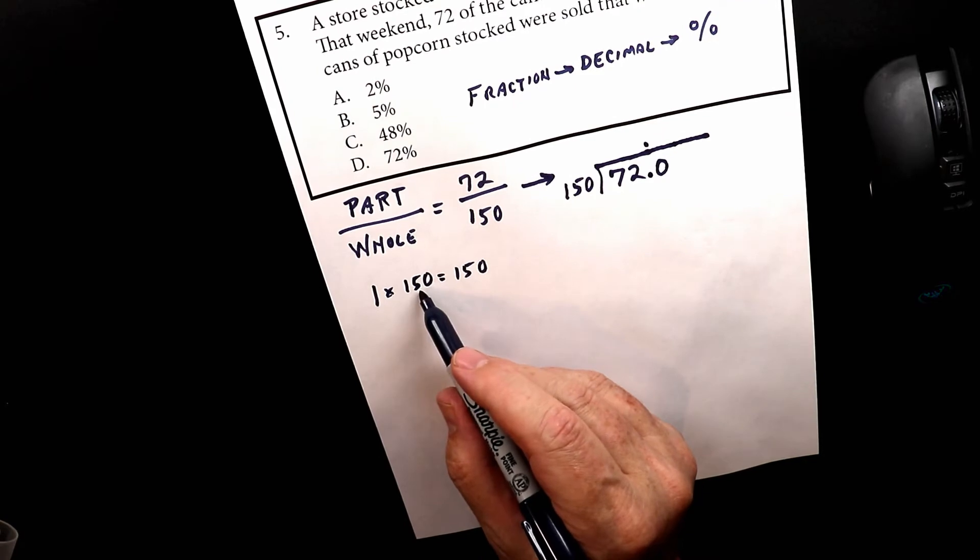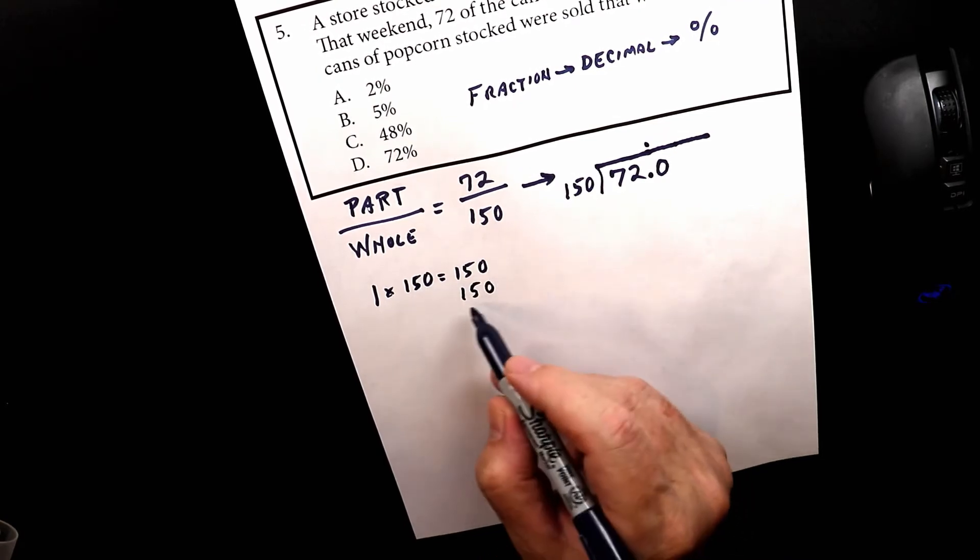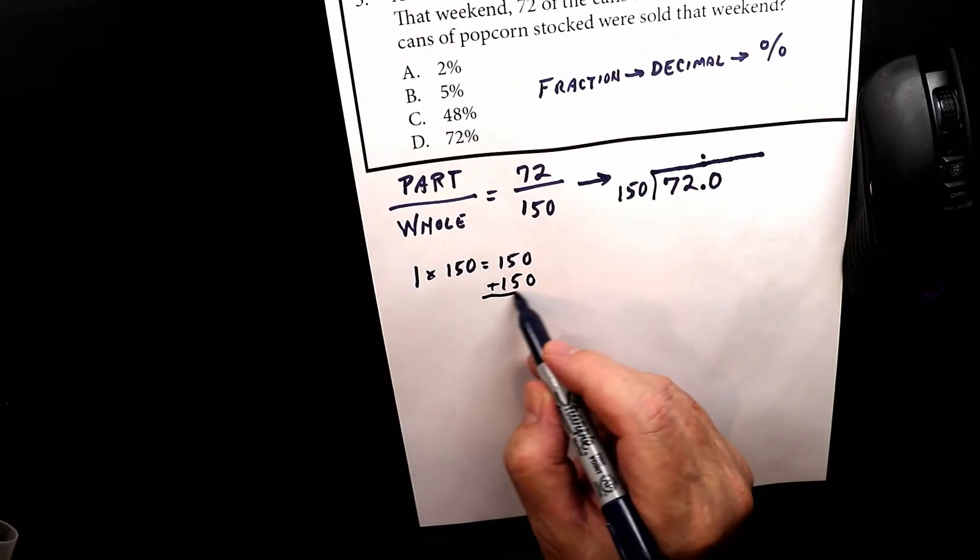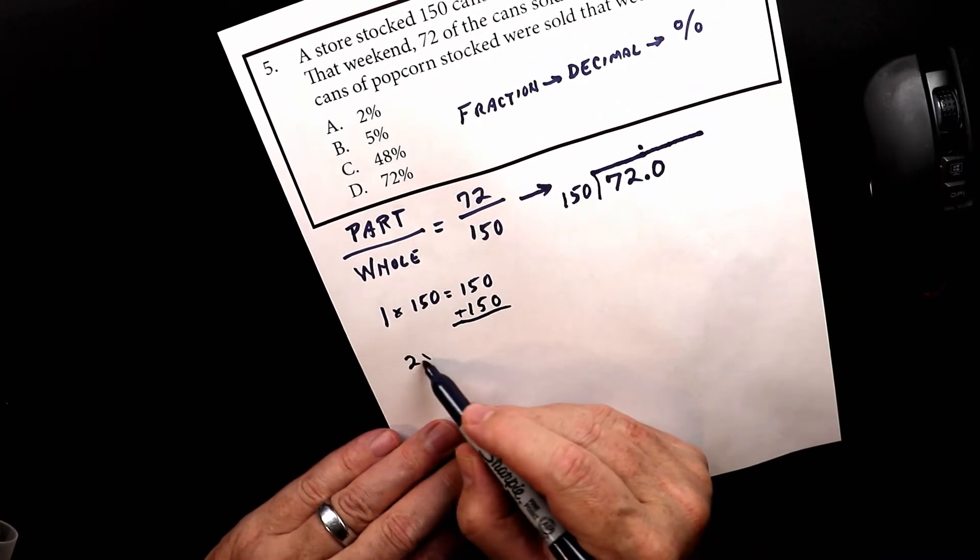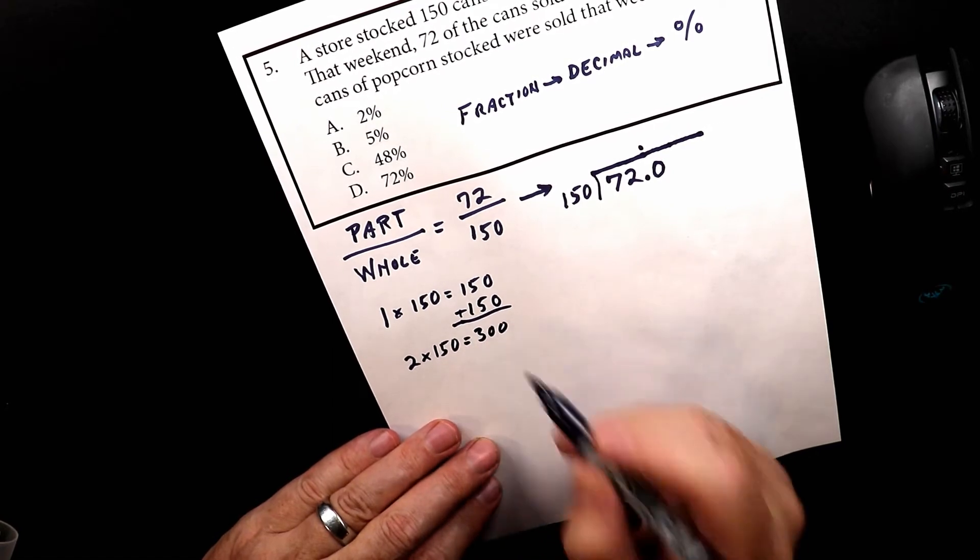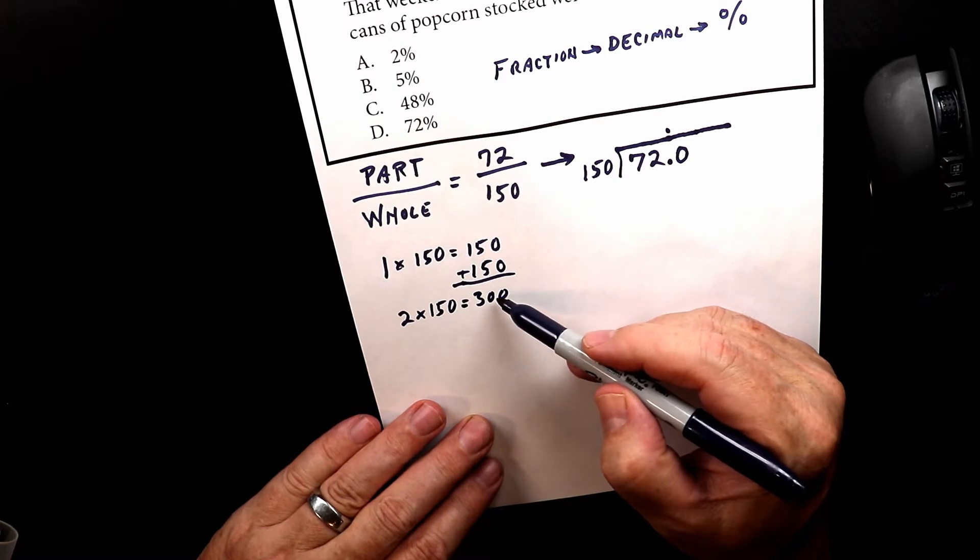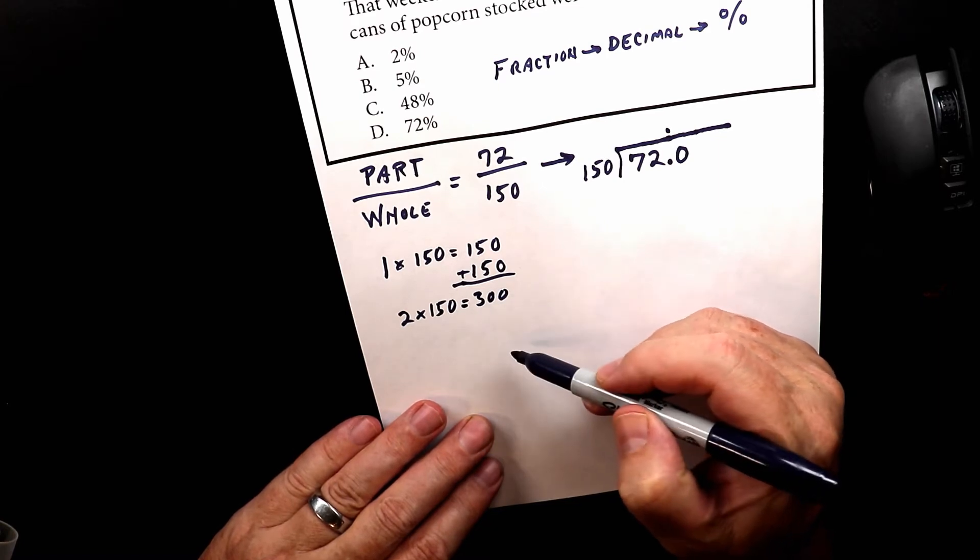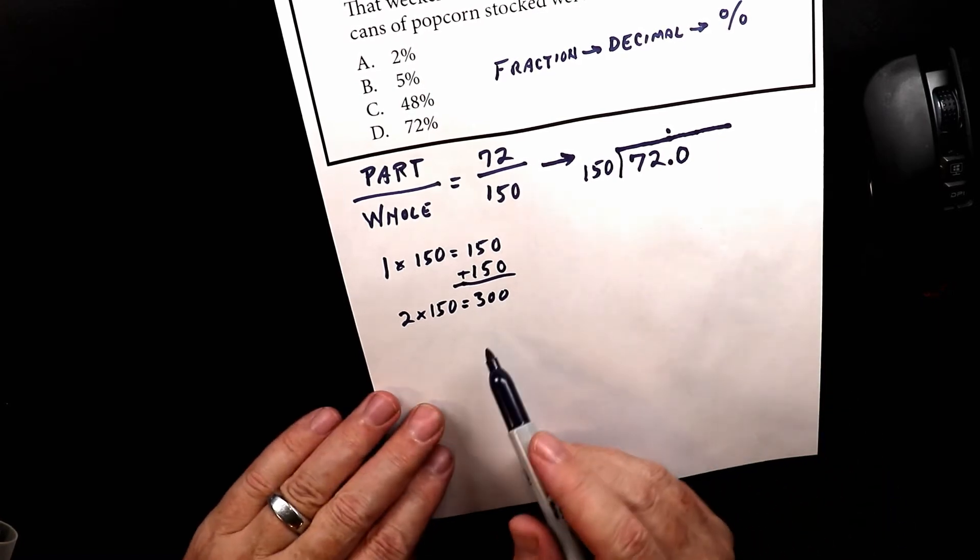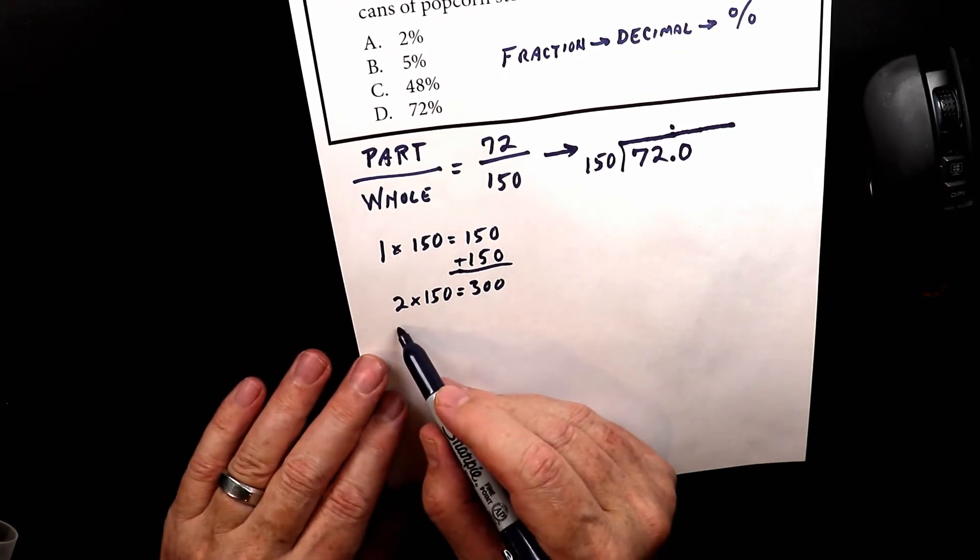So what I want to do if I want to figure out what two times is, I'm just going to add the 150 to the 150. And what that will do is give us 2×150, which equals 300. Okay, so what I'm doing is I'm just going to add 150 to this number and the next number and the next number all the way down so that I can figure out my 150 times tables. So let's just do them real quick.